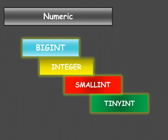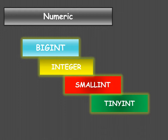Next we have BIGINT, INTEGER, SMALLINT, and TINYINT. An integer is a whole number that can have a positive, negative, or zero value — it cannot be a fraction nor have decimal places. For example, 23 is an integer, but 23.30 is not — that would be a decimal number.